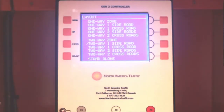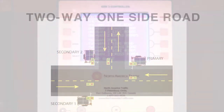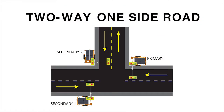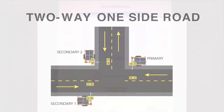Two Way One Side Road requires the primary and secondary one to control the two-way traffic. The secondary two will be the side road with its own phase.